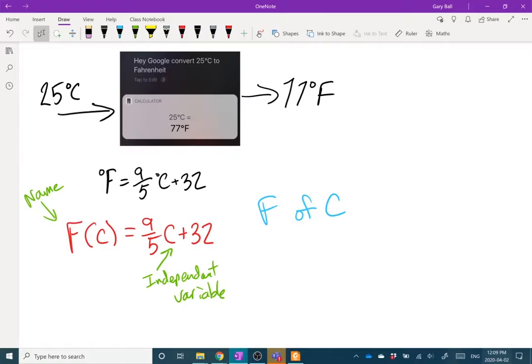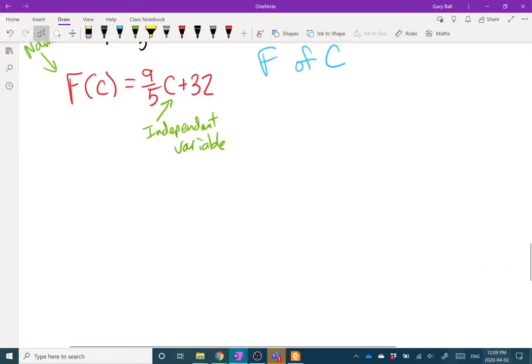So let's actually use this. If I wanted to use this function to find out how much 25 degrees Celsius is in Fahrenheit, I would write it out as f of, now instead of the c, I want to know 25 degrees. So instead of that c, I put my 25 degrees.